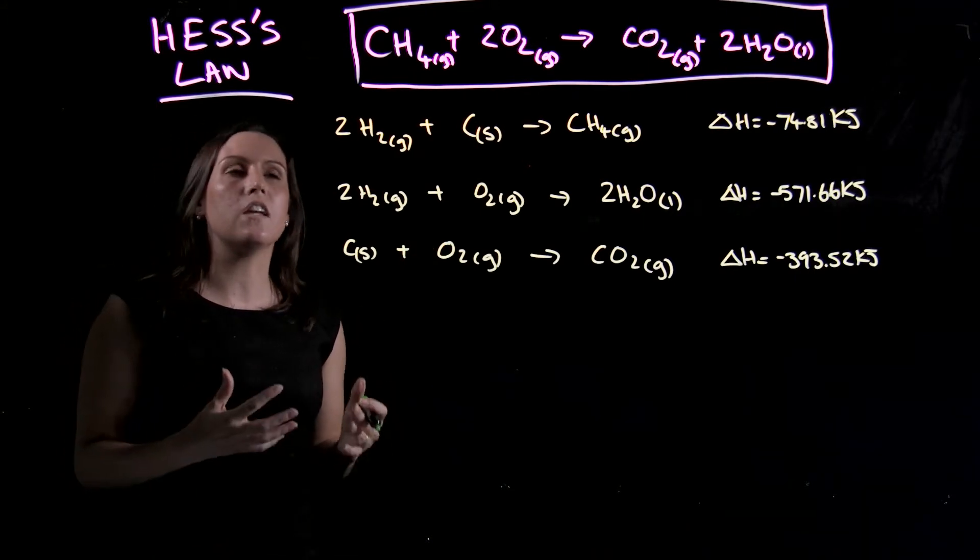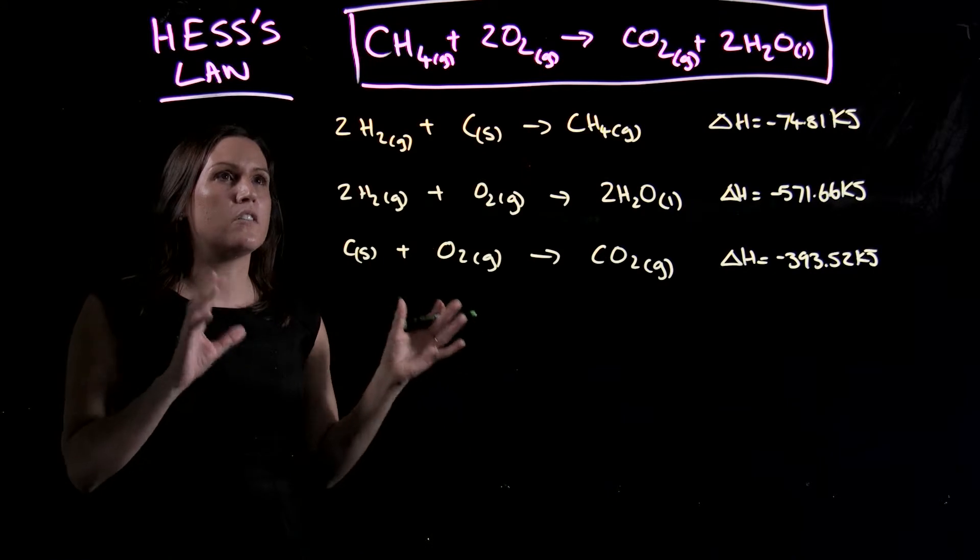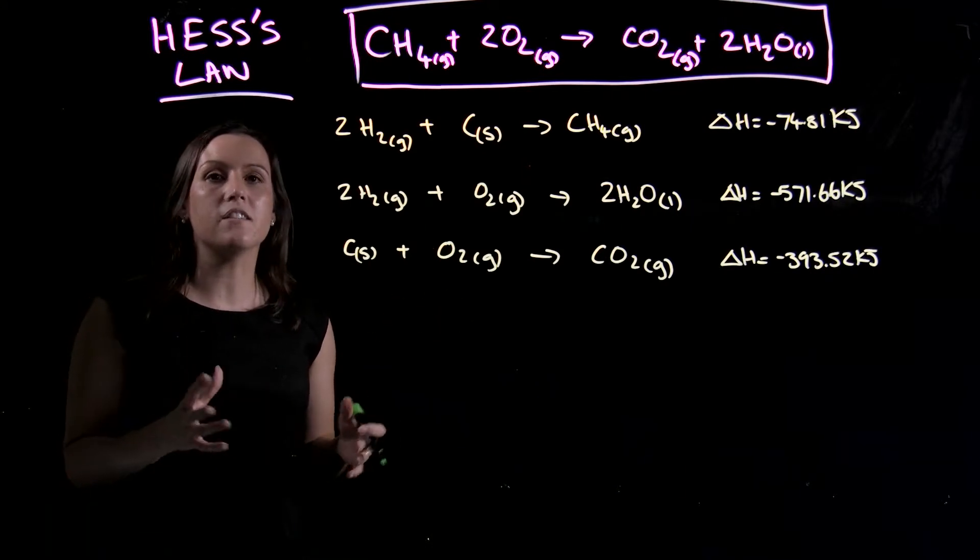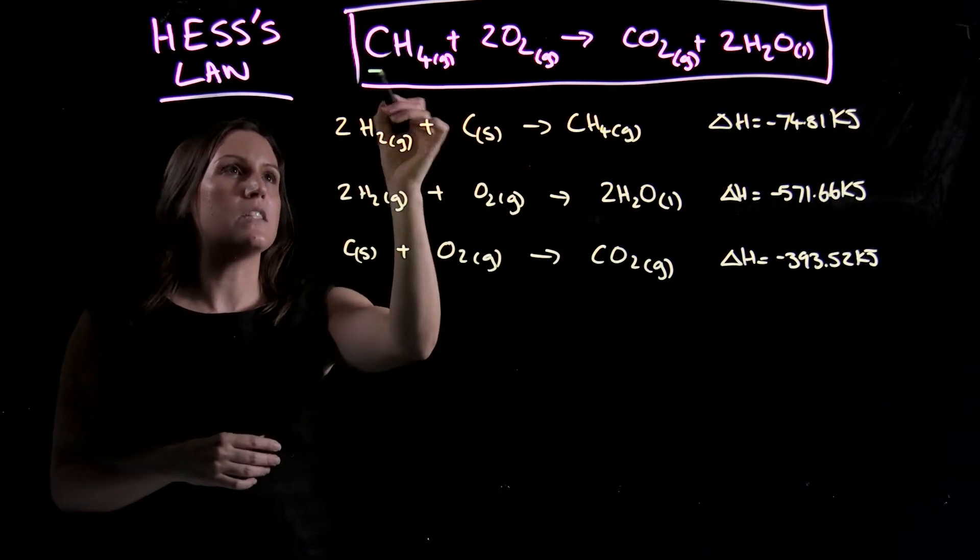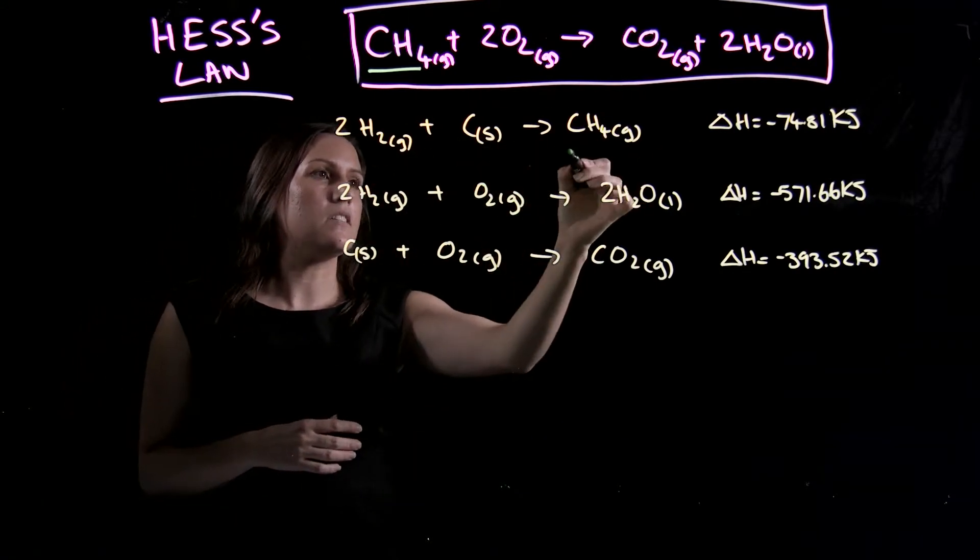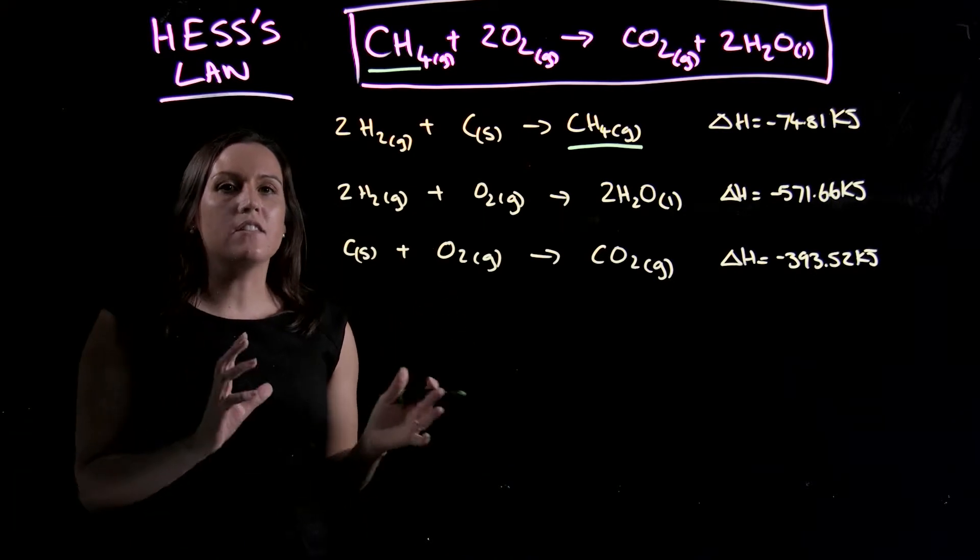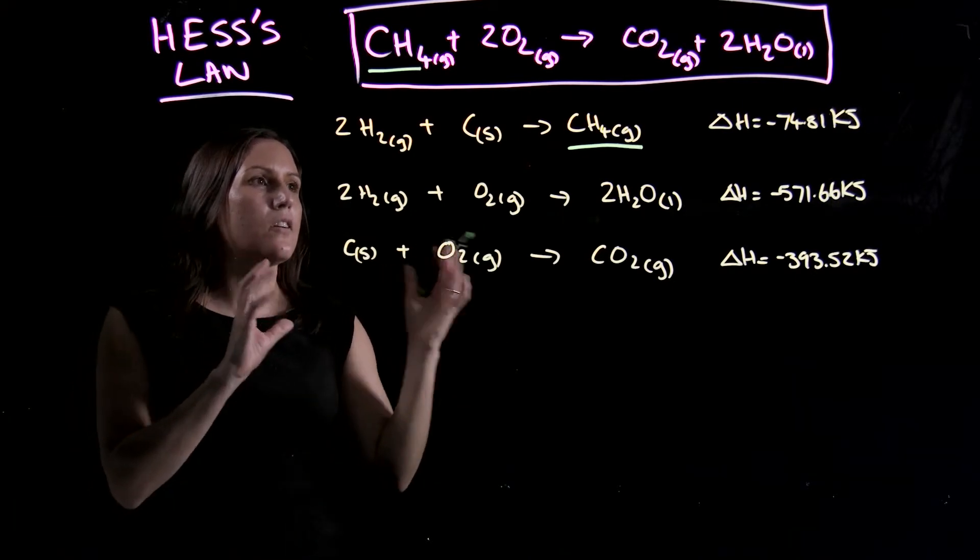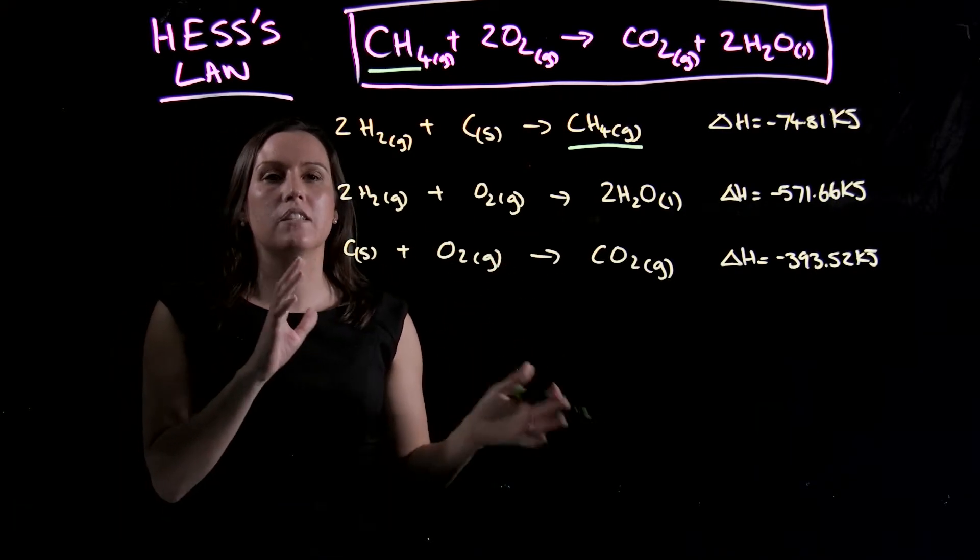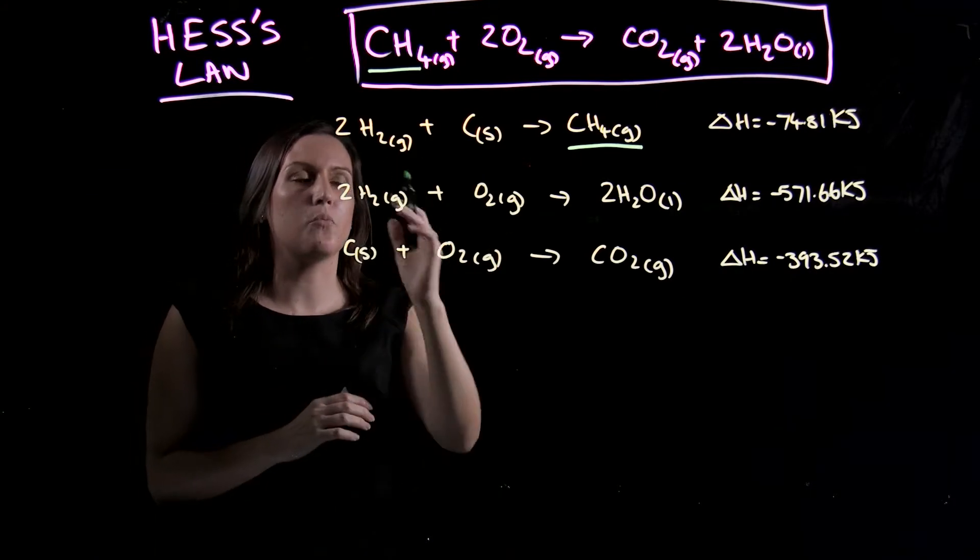So the first thing you need to do is find your individual components of the overall reaction, so your products and your reactants. So we've got CH4 here, and if I look through my other ones, I can see CH4 is here. So I use this as a guide, so I look at where CH4 is, and I make sure that it's identical to the top reaction.